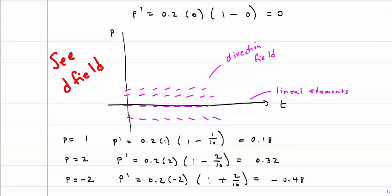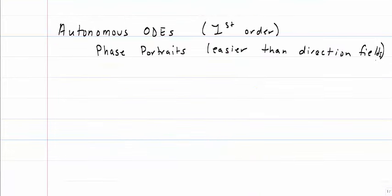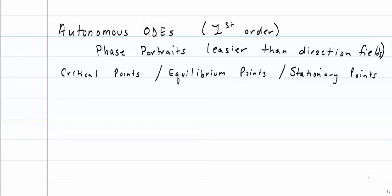So I'll put a note in the notes that to see the complete direction field, you should use dField. So if I have autonomous ODEs, and we're only dealing with first-order ones at this point because the first derivative is the slope, I can draw what's called a phase portrait, which is much easier than drawing a direction field or a slope field. What we're looking for are critical points. They're also called equilibrium points, and they're also called stationary points. These critical points are when the slope equals 0.